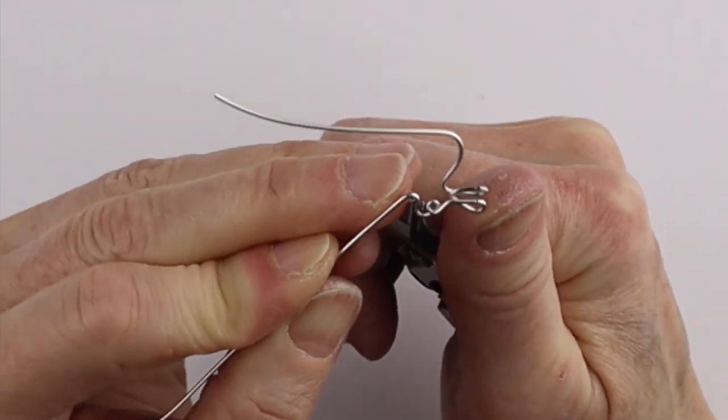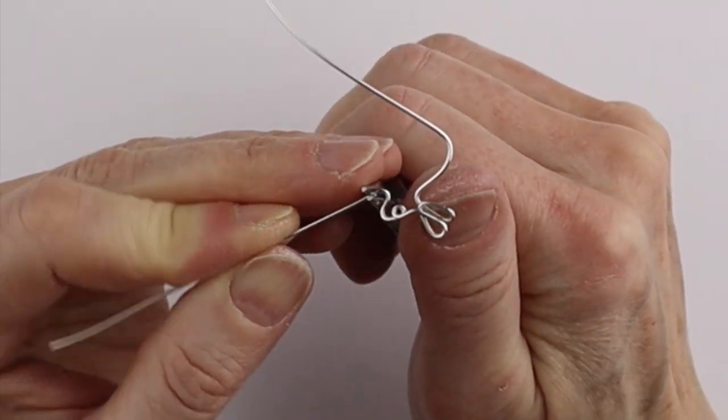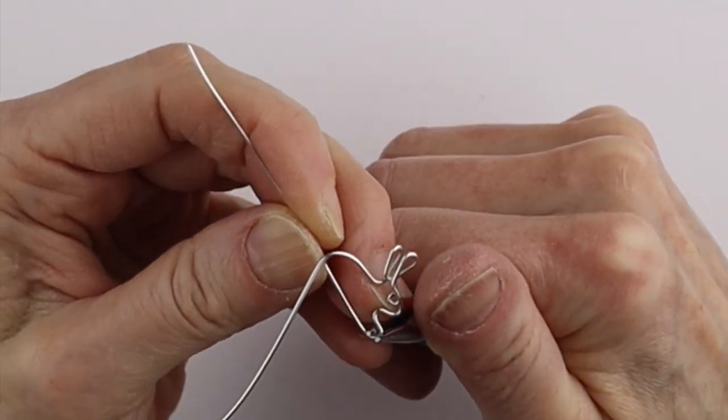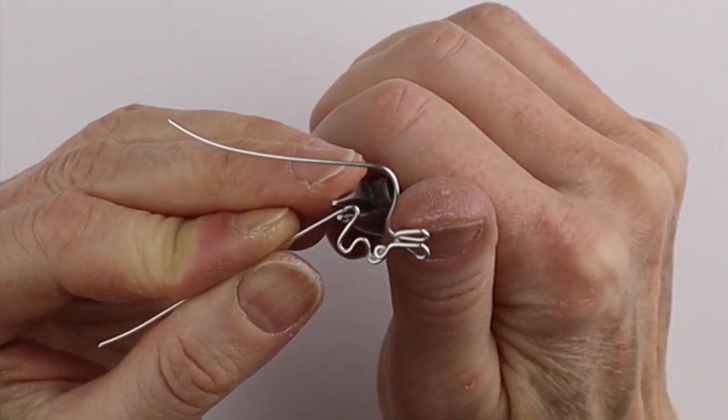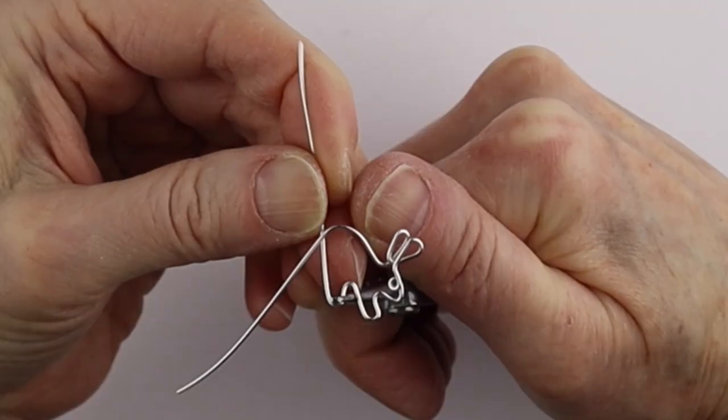Bend it forward for the front paw and bend it back. We're going to keep this design very simple so just another little bend for the back leg.